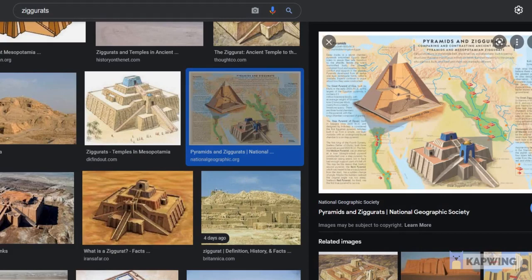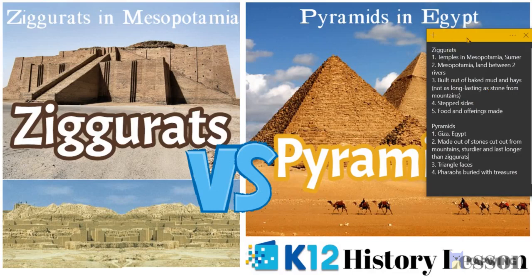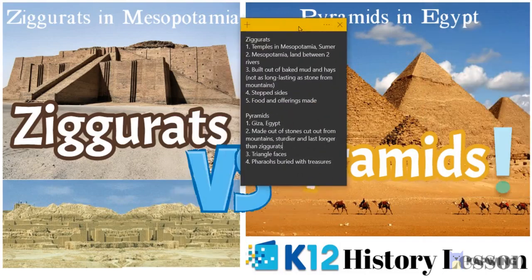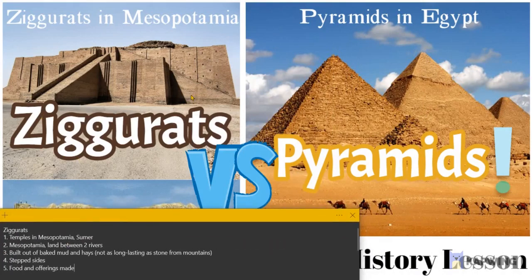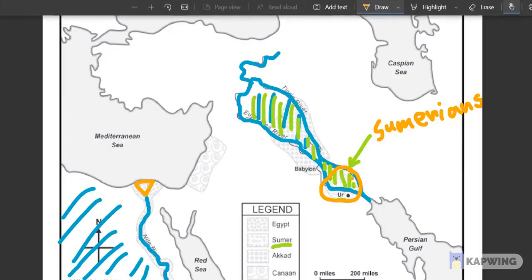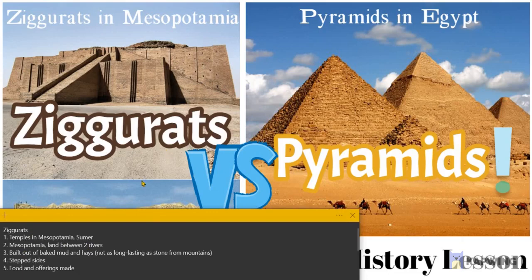So now let's take a look at some key things to remember — comparisons and contrasts between pyramids and ziggurats. Ziggurats were temples in Mesopotamia, in the region of Sumer. Mesopotamia means land between two rivers. Ziggurats, unlike pyramids, were built out of baked mud and haze, not with stones like the pyramids were. So that's one key difference — ziggurats were made out of baked mud and haze, not out of stones.